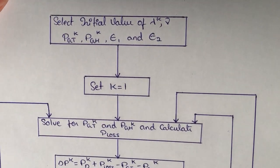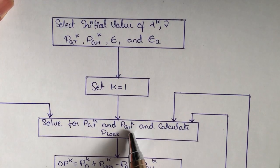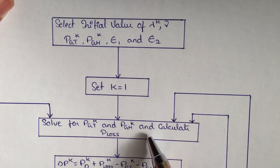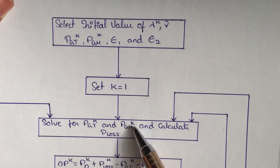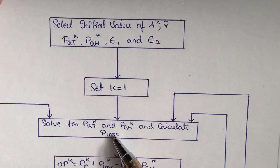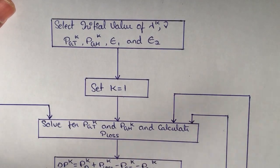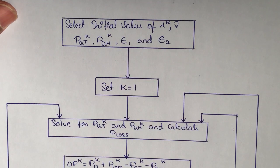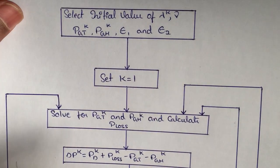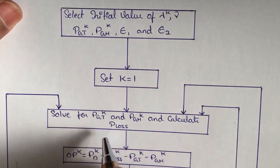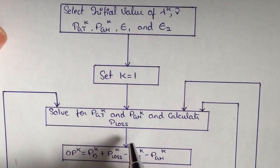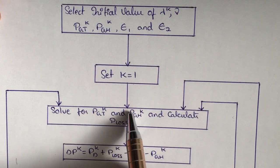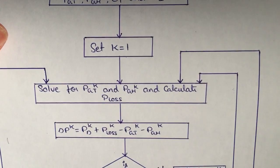After defining the value of k, we calculate PGT k, PGH k, and P loss from the coordination equations — specifically equations 6 and 7 from the previous video. If you are not familiar with the coordination equations, please refer to our previous video.